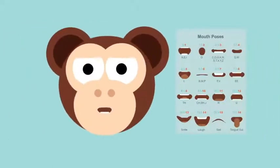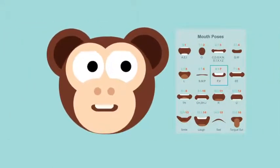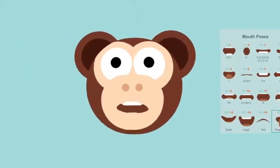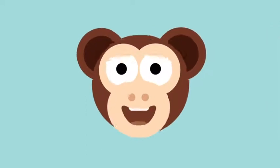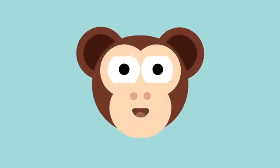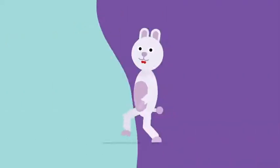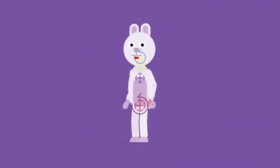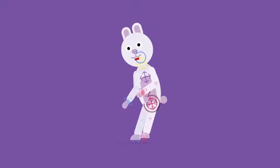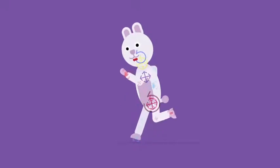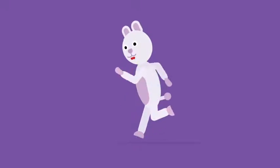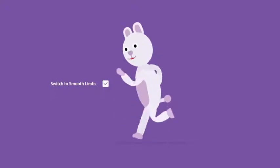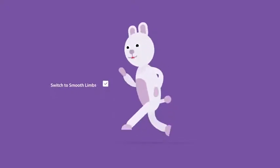And for the mouth, simply select any of the preset animations, so you can make it sad, laugh or even talk. Of course, for the more experienced users, the toolkit comes with one of the most advanced character rigs available. This can be used to make both rigid and smooth limbs animation.